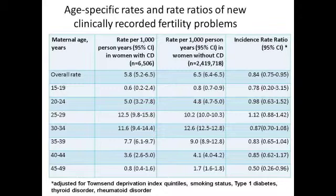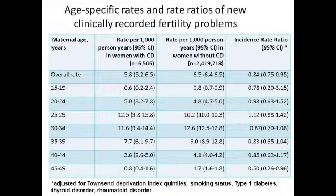Out of 2,426,224 women, 6,506 had celiac disease, giving a clinically diagnosed prevalence of 0.3%. Of these women, 290 had evidence of clinically-recorded fertility problems, 42% of which were in women with undiagnosed celiac disease and 58% in diagnosed celiac disease.